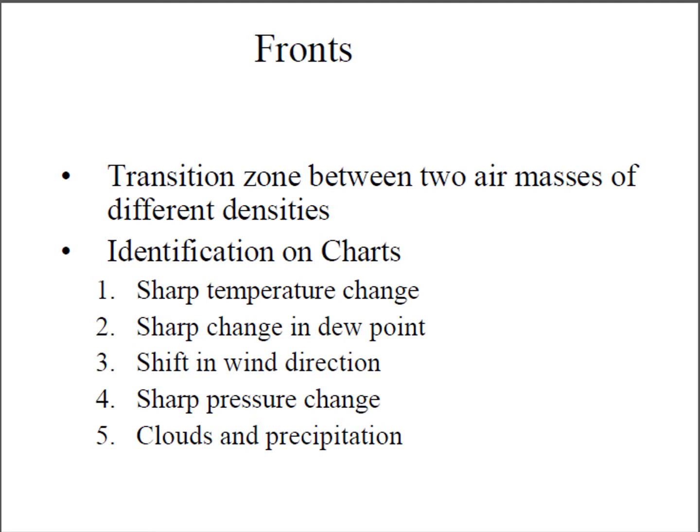How can one identify a front on a weather map? There are different indicators. One is a sharp temperature change — temperature changes along a weather front. Another identifier of a front is a sharp change in dew point. Dew point is a measure of how much moisture is in the atmosphere. The higher the dew point, the more moisture or water vapor in the air. So if there's a sharp change in dew point, that represents a sharp change in the air's moisture content — that's a signal of a front.